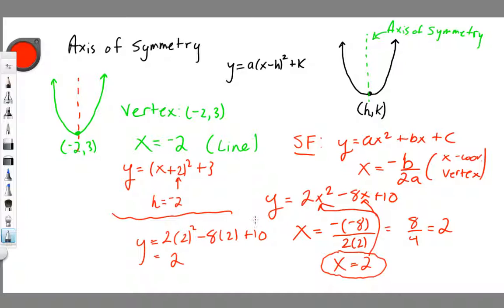Hopefully this explains what the axis of symmetry is. It's the line that divides the graph of a parabola into exactly two equal pieces. In standard form, it's given by x equals negative b over 2a. In vertex form, it's your h value. Hopefully this helps. I'll see you guys in class. Thanks for watching.